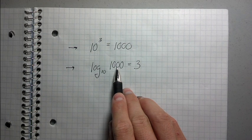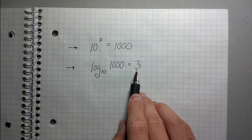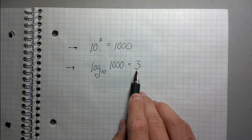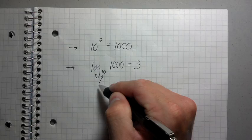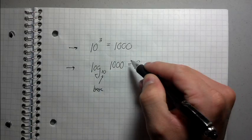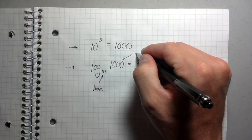I'm going to say that one more time. The value of a logarithm is equal to the number that you have to raise the base to to equal the argument. So, this is the base, 1,000 is the argument.